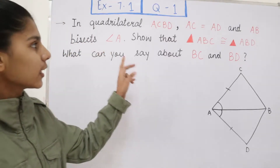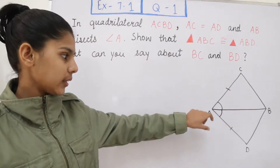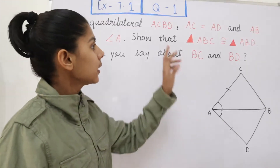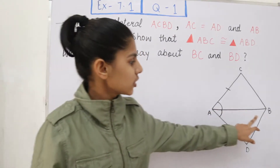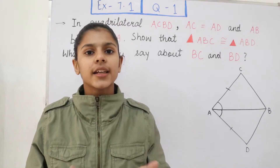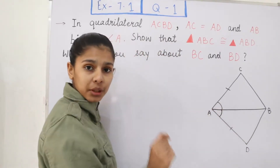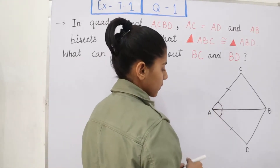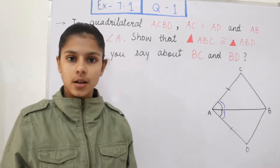This question is on quadrilateral ACBD. You can see in the figure there is a quadrilateral ACBD. AC is equal to AD — this line segment AC is equal to line segment AD, as given in the question. And AB bisects angle A, meaning this line segment AB is bisecting angle A, dividing it into two equal parts. So this angle and this portion will be equal because line segment AB bisects the complete angle.